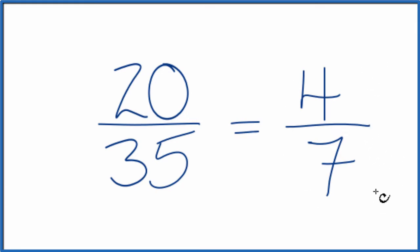So this is the simplified fraction. If you divide 20 by 35 or 4 by 7, you're going to get the same number. These are equivalent fractions; it's just that we've simplified or reduced 20 over 35 down to 4 over 7.